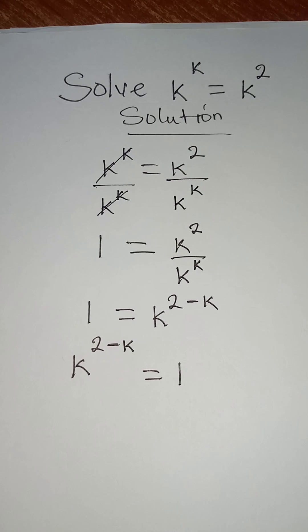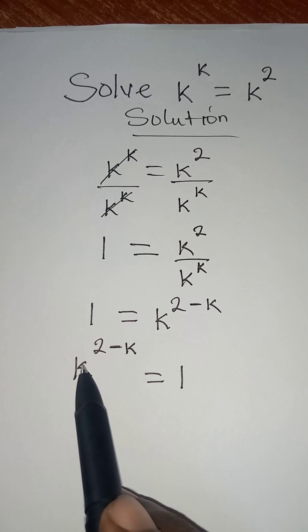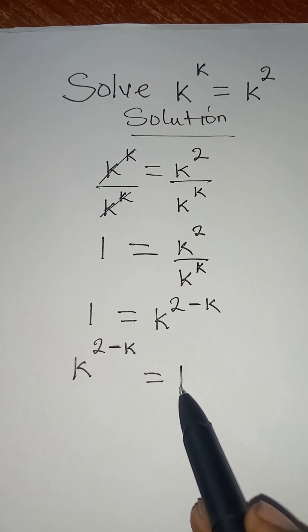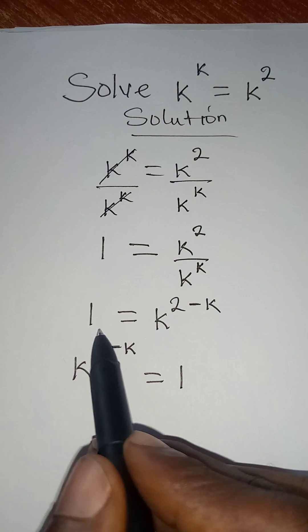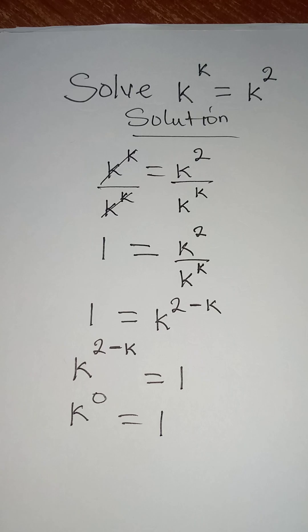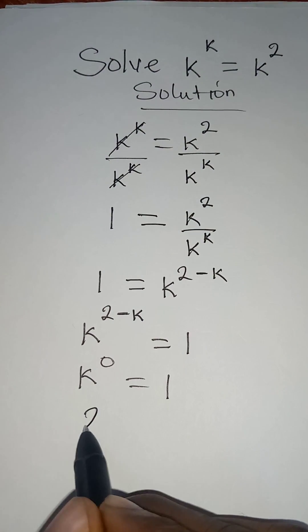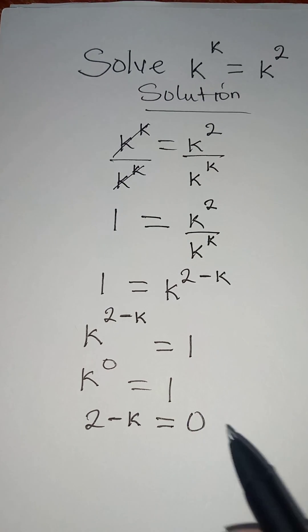And then you will also recall that for any number raised to a power, if it is equal to 1, it means that the whole power is equal to 0. So remember, it is only k to the power of 0 that can give us 1. So therefore, we are going to say that the power here, which is 2 minus k, is equal to 0.